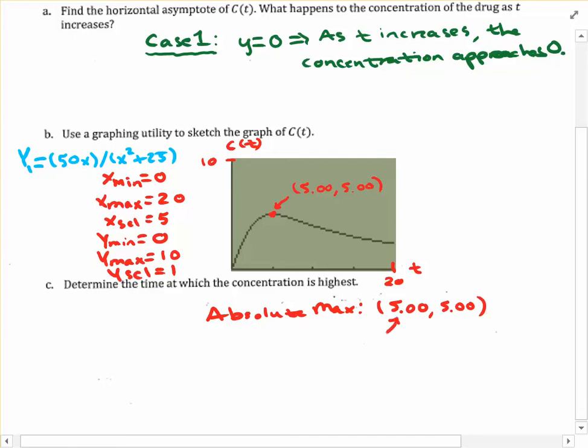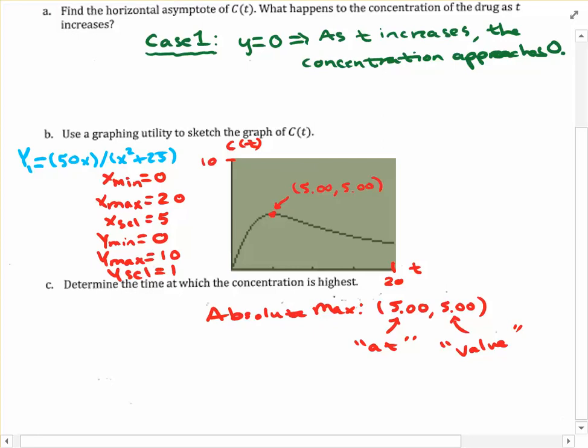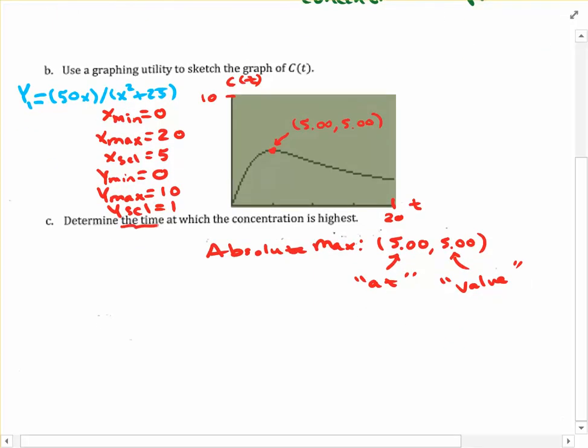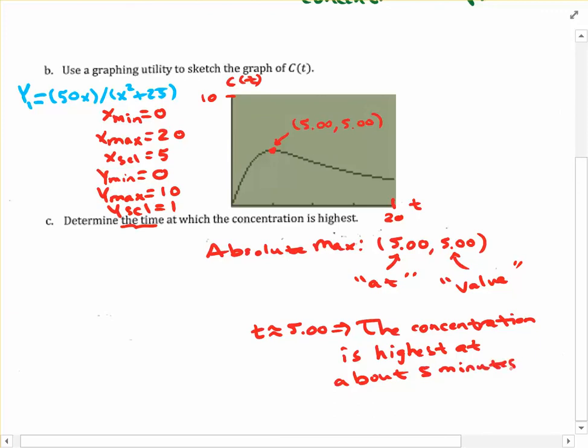Keep in mind, from Chapter 3 material, the x value, or in this case a t value, tells you where it's at. And the y value tells you the actual value of the maximum. So the y coordinate here would be the maximum level of concentration, so 5 units. So that's our value. And we're only interested in the time at which the concentration is highest. So what we would want to take from this ordered pair here is actually the x coordinate because our x's stand for t values. So under here, let's go ahead and start forming our answer. t is about 5.00, meaning that the concentration is highest at about 5 minutes after injection.